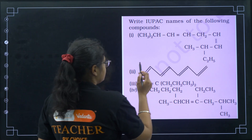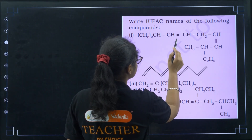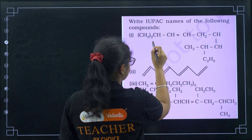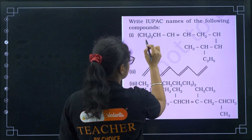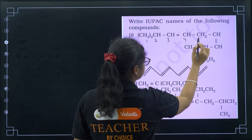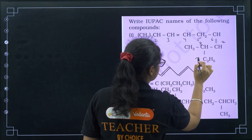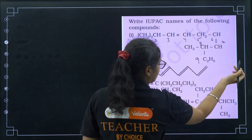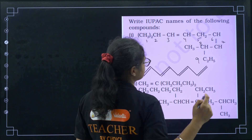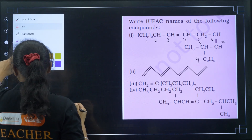Looking at this structure: it has two double bonds. If I number the chain — 1, 2, 3, 4, 5, 6, 7, 8, 9, 10 — the double bonds are at the third and sixth carbons. There are also two CH3 groups.